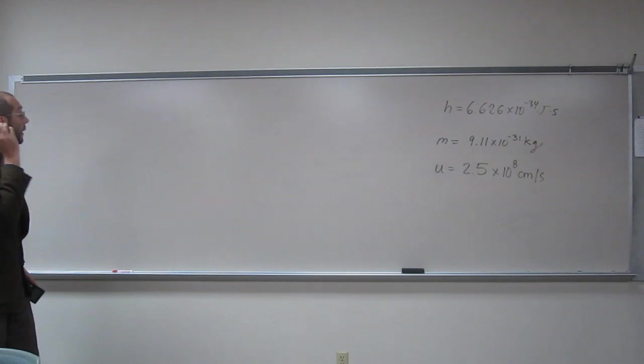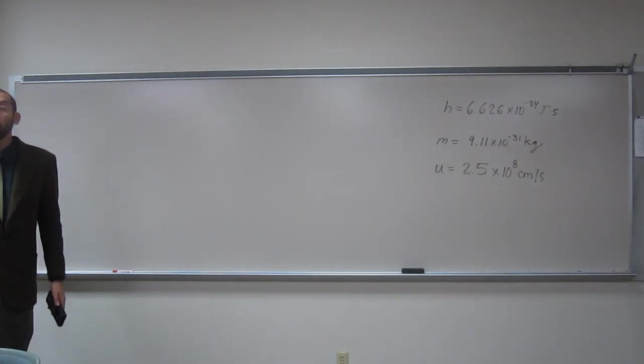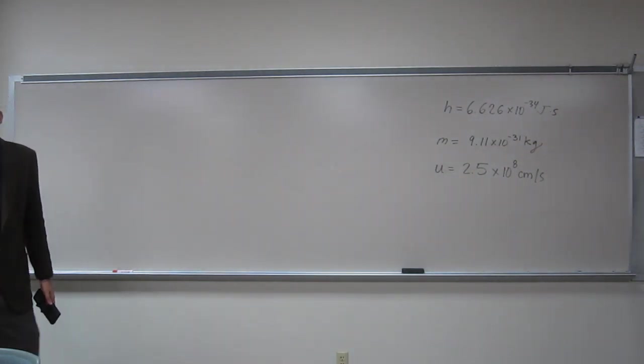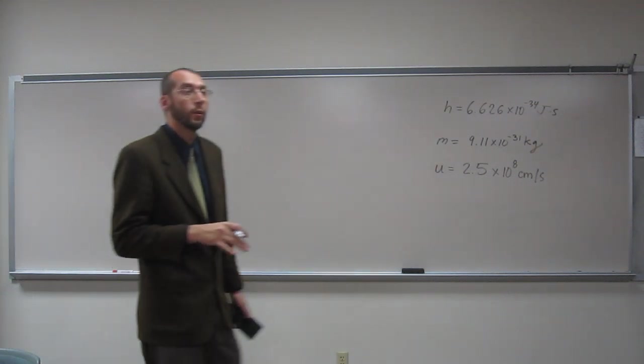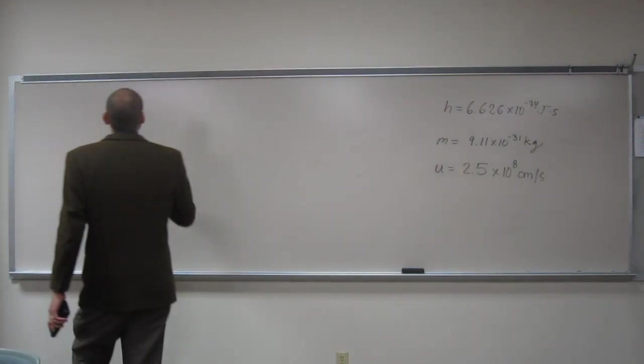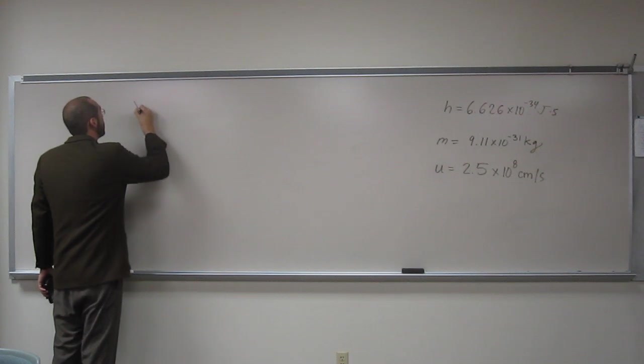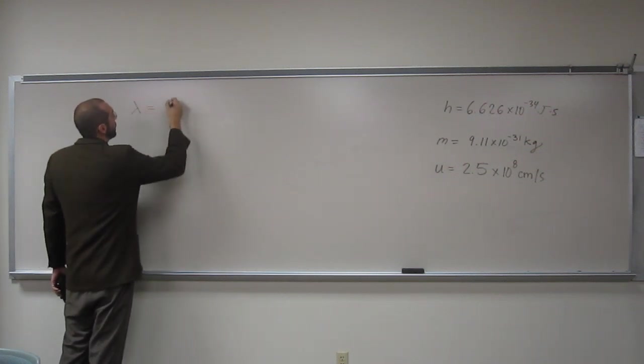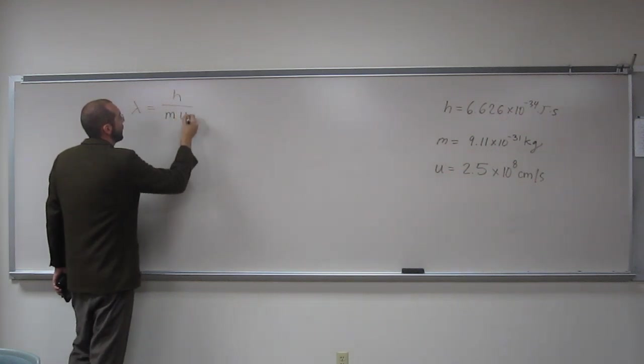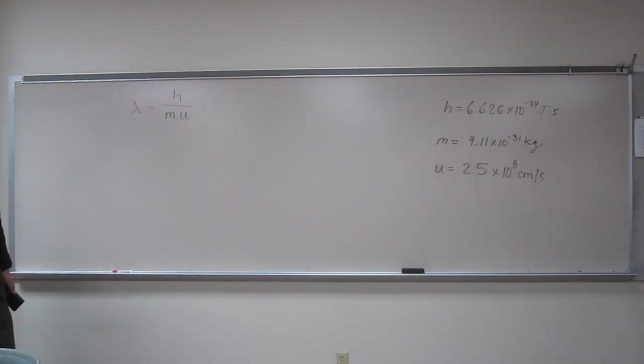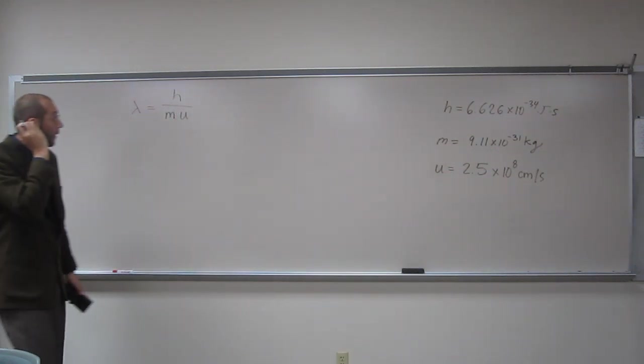And then it gives the mass of an electron as being 9.11 times 10 to the negative 31 kilograms. So in order to figure out the wavelength from the mass and velocity, you have to use de Broglie's equation. So if you guys remember it, write that down. The wavelength equals Planck's constant divided by the mass times the velocity, and we have all of that stuff.